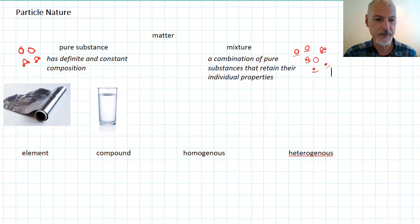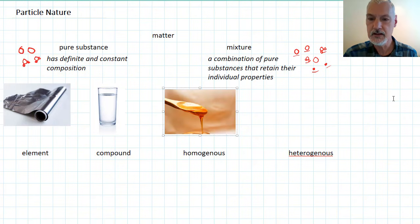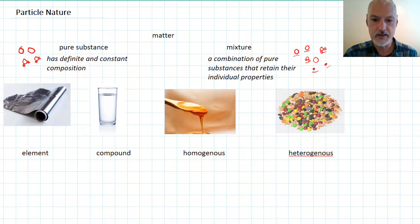Here are some examples of things that would fit that description. Honey, a mixture of sugars and water. In this conglomeration of peanuts, and Smarties, and raisins. Again, a bunch of individual properties from individual substances.